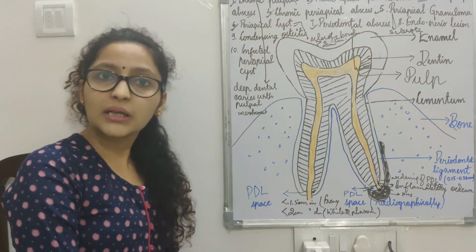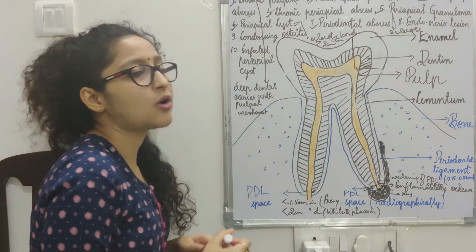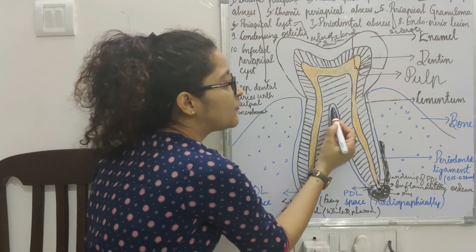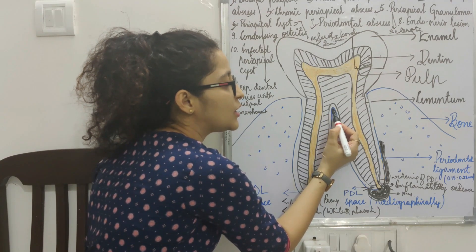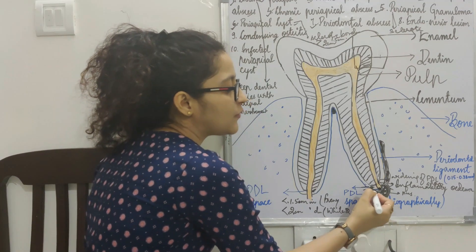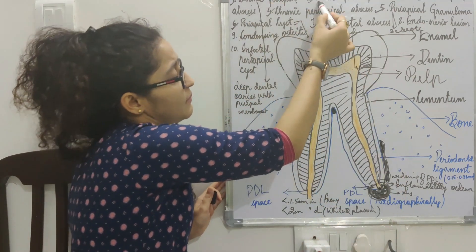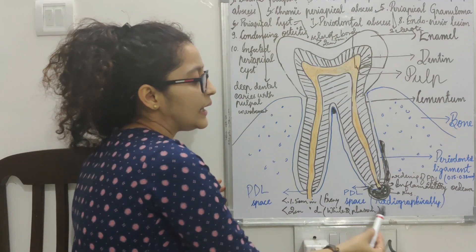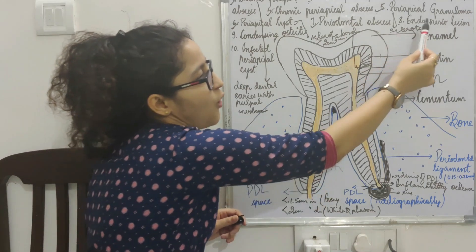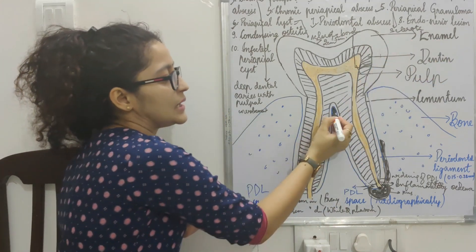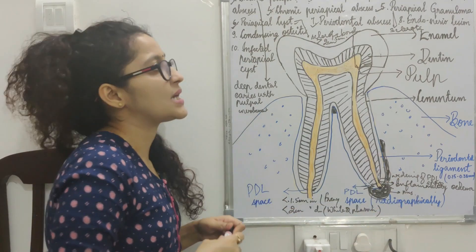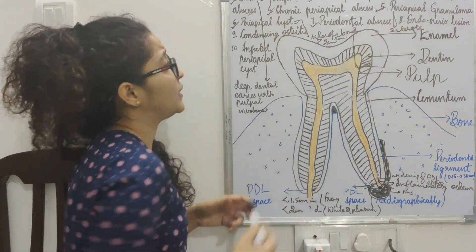In some colleges they also give the diagnosis of endo-perio lesion. In an endo-perio lesion, you will see furcation involvement — a radiolucency in the furcation area — and also an ill-defined or well-defined radiolucency in the periapex of the tooth, suggestive of endo-perio lesion. Basically, you will see furcation involvement and also a periapical lesion.